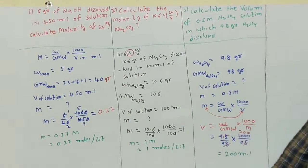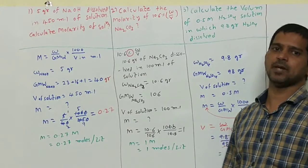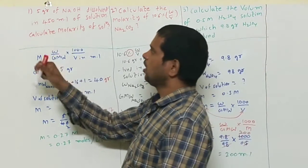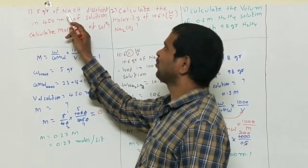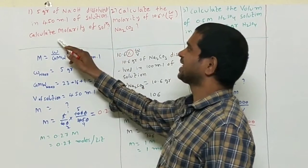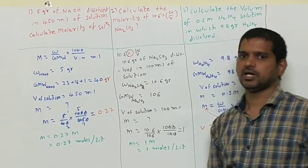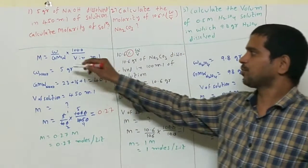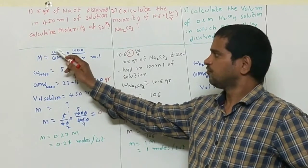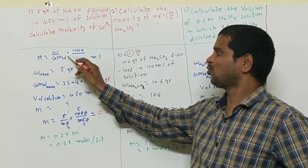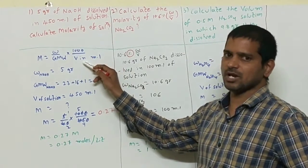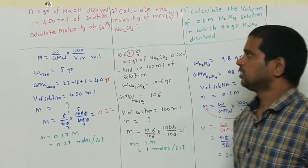Good morning. Today I am going to explain problems based on molarity. First question: five grams of NaOH dissolved in 450 ml of solution — calculate the molarity. First I am writing the formula for molarity: M equals weight divided by gram molecular weight, multiplied by 1000 divided by V in ml, that is the volume of solution in ml.